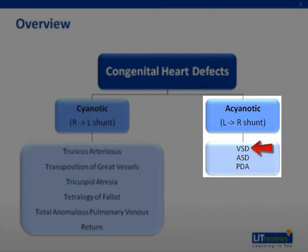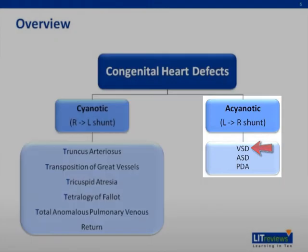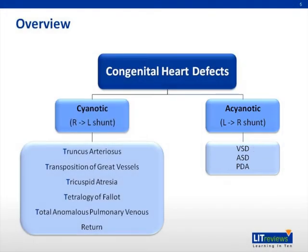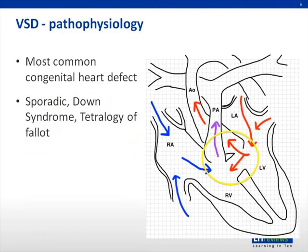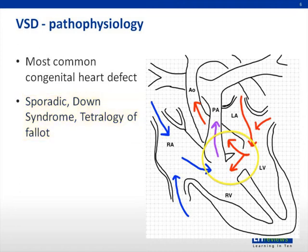VSDs are the most common congenital heart defects. They can be sporadic, part of a congenital syndrome, or a component of more complex defects, such as the tetralogy of Fallot. They usually occur in the membranous portion of the septum.